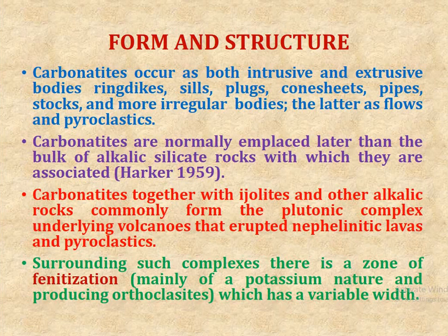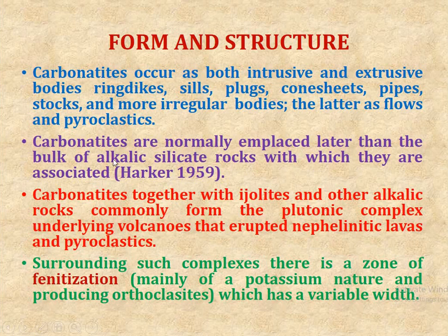Regarding the form and structure of carbonatite: carbonatite occurs as both intrusive and extrusive bodies, including ring dikes, sills, plugs, cone sheets, pipes, stocks, and more irregular bodies — the latter as flows and pyroclastics. Carbonatites are normally emplaced later than the bulk of alkaline silicate rocks with which they are associated (Harker, 1959).